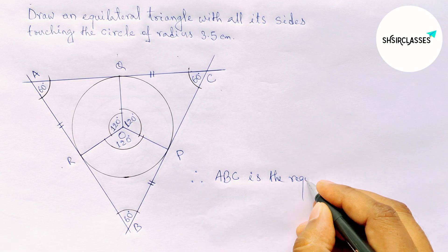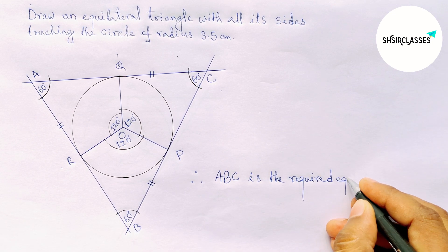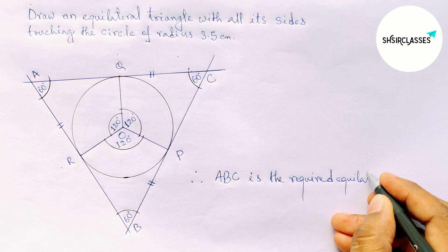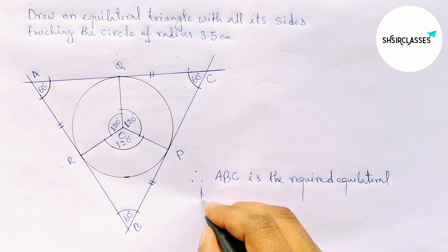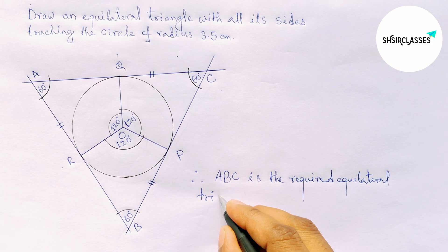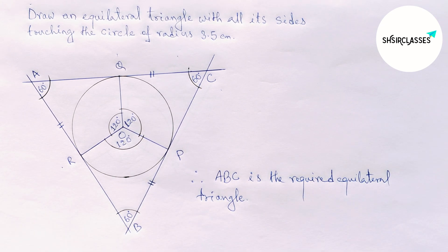Therefore, triangle ABC is the required equilateral triangle. By this way you can draw an equilateral triangle. That's all — thanks for watching, please share it with your friends.